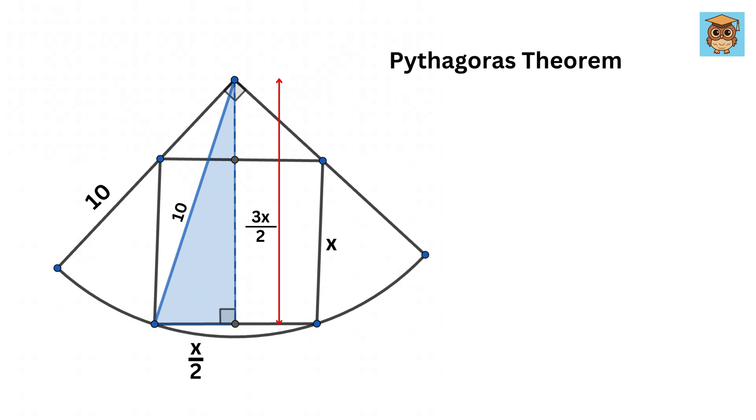So using Pythagoras theorem, we get 10 squared equals (X over 2) squared plus (3X over 2) squared. This will be X squared over 4 plus 9X squared over 4, and it will be equal to 100. This will become 10X squared over 4 equals 100. So 10X squared will be 400, or X squared equals 40.